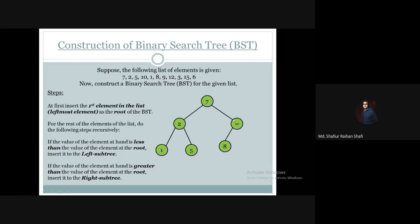Then we take 9. In the right subtree, the root is 10 — 9 is less than 10, so 9 moves to the left subtree of 10. The left subtree root is 8 — 9 is greater than 8, so 9 goes to the right subtree of 8. Then we take 12 — 12 is greater than 7, so it goes to the right subtree, and 12 is greater than 10, so 12 goes to the right subtree of 10, just like this.